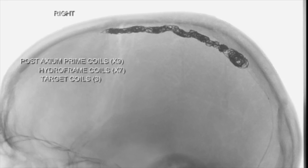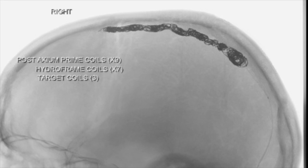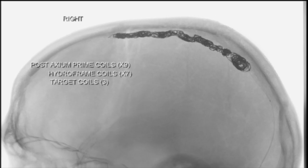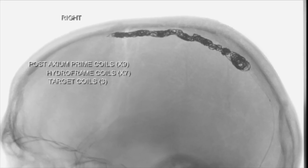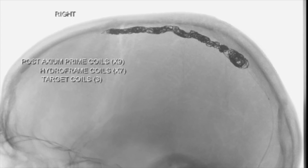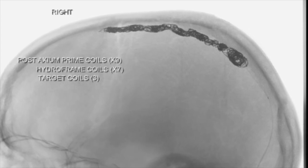Fortunately, on the six-month follow-up, the patient has progressed quite favorably. He hasn't had any seizures and his anti-seizure medications are being weaned off. He is neurologically intact and fully functional. In conclusion, this case illustrates the challenge of diagnosing an arteriovenous fistula simultaneous with venous sinus thrombosis, as well as the challenges associated with fistula embolization that may involve passing through an occluded sinus.